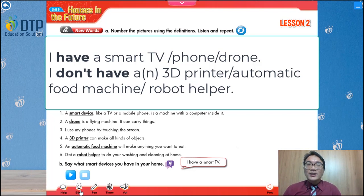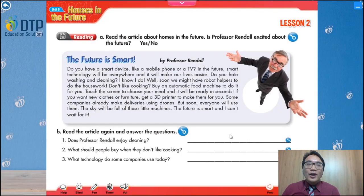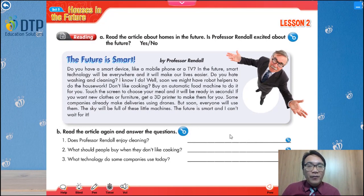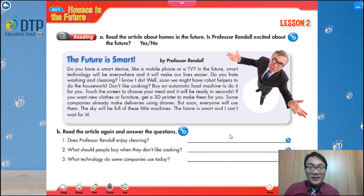So you finish the new words. Let's move to reading. Reading, Part A: you read the article about homes in the future and answer the question — is Professor Randall excited about the future? Yes or no? You can read and tell me whether he is excited or not. Now we read together: 'The Future is Smart' by Professor Randall.